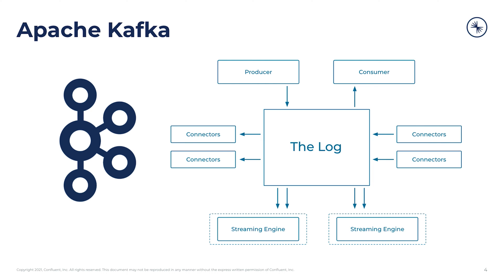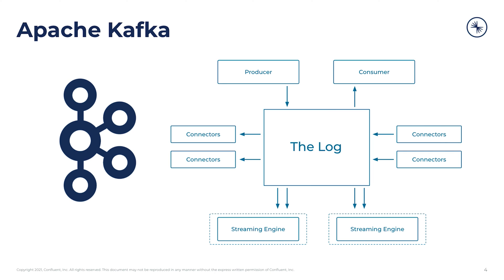These logs are append only. As events come in, they get appended to the end of the log, and at that point they become immutable — they can't be changed, updated, and they don't go away. Unlike some message queuing systems you might be familiar with, Kafka records will be stored and won't disappear as soon as they are consumed, like a typical message queue.